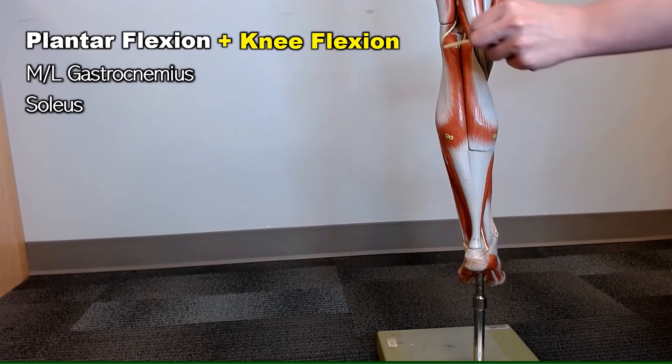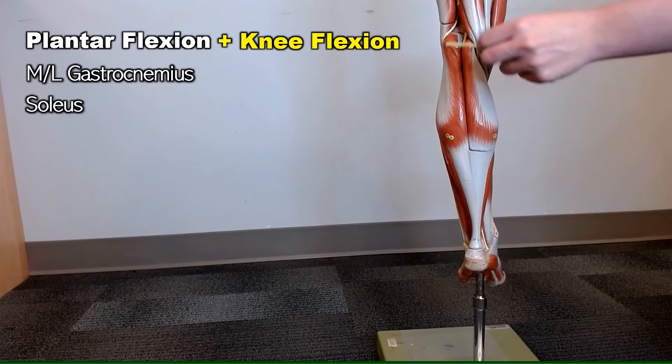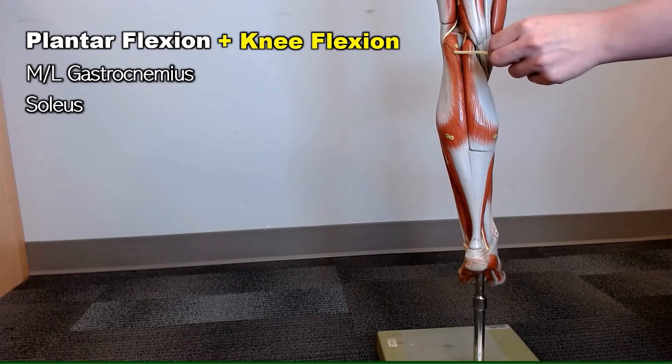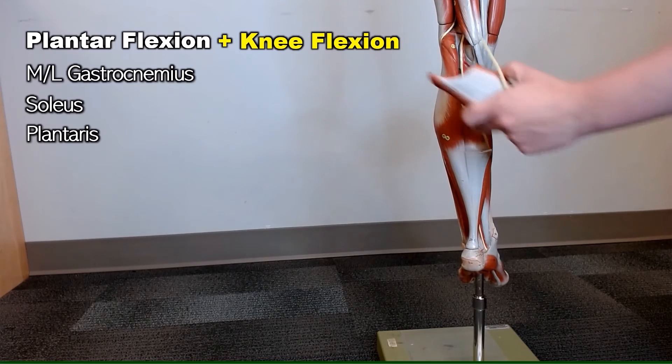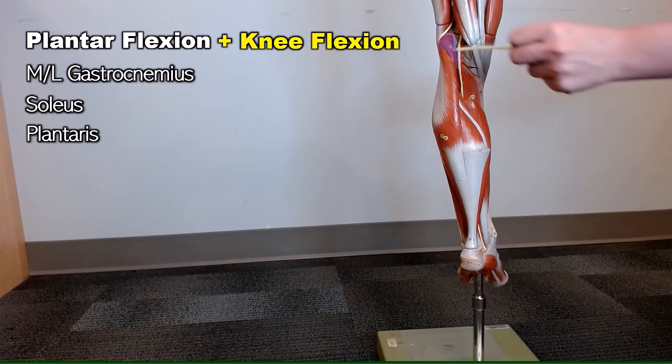Coming up over the lateral head of the gastrocnemius, you can see the plantaris muscle, which you can see better if you pop that off.